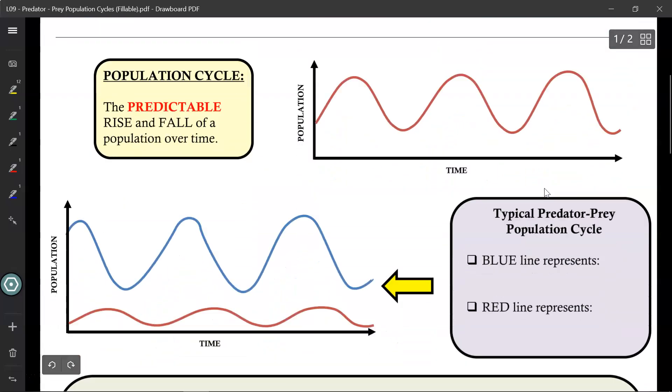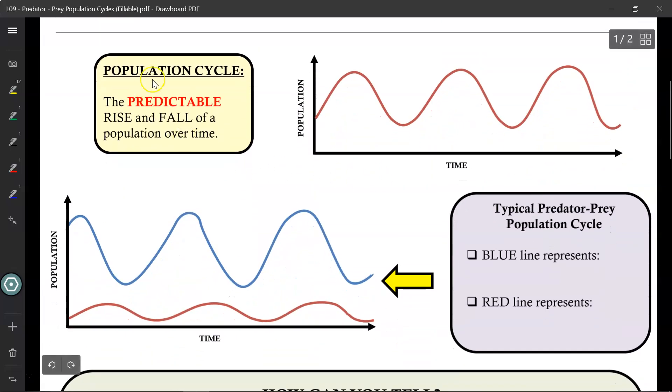In today's lesson, we will be looking at something called a population cycle. A population cycle is defined as the predictable rise and fall of a population over time. As you can see, if we have a graph of population versus time, the population rises and falls, rises and falls, and it's repeated over and over again, and thus it is predictable. The word cycle means a time period that repeats itself.